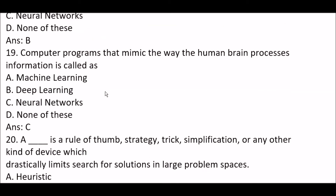Next question: computer programs that mimic the way the human brain processes information are called — Option A: machine learning. Option B: deep learning. Option C: neural networks. Option D: none of these. The right answer is Option C — neural networks.